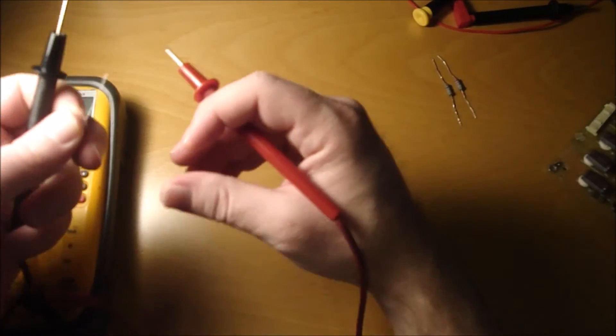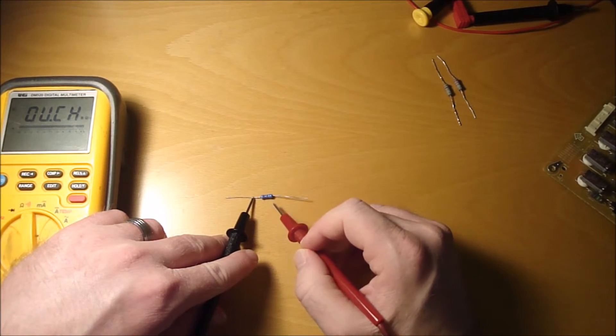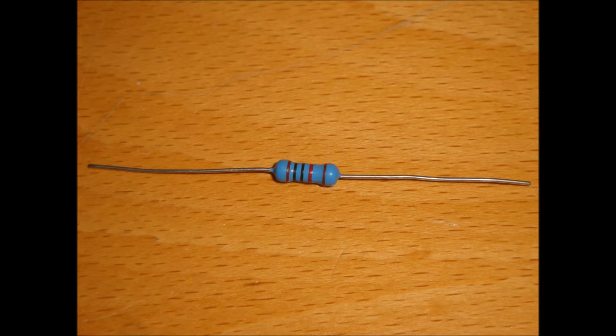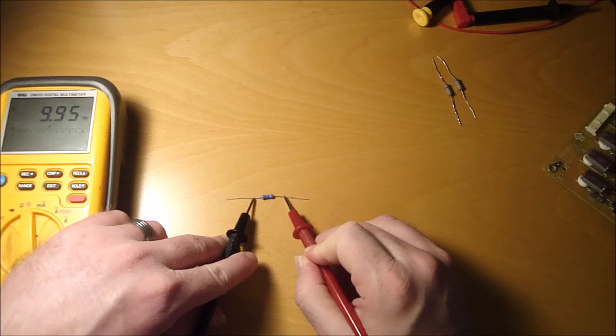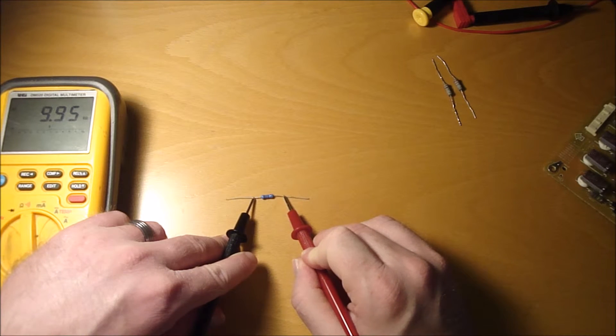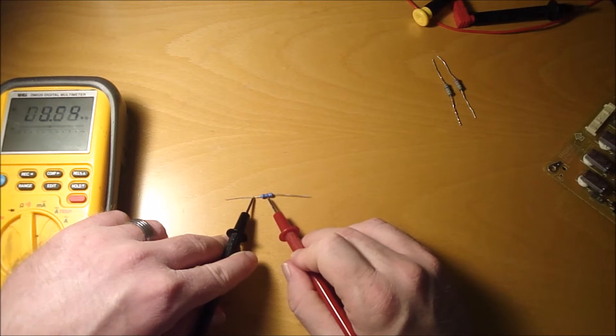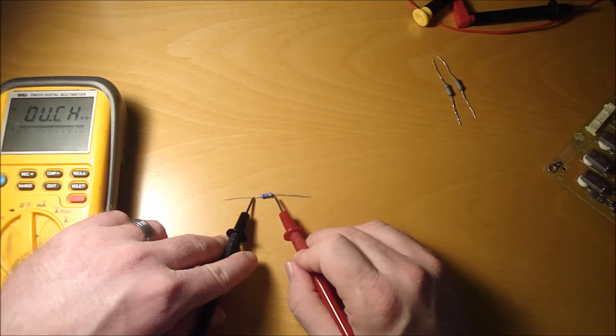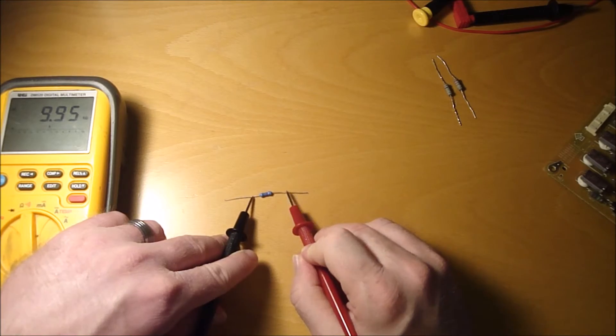Now we got a five band. Alright, this one is brown, black, black, red, brown. So the brown is one, the black is zero, the black is zero. So those are your three number bands. So you got 100 times the fourth, which is the multiplier, which is red, which is times 100. So it would be 10,000 ohm resistor. So that's pretty good.